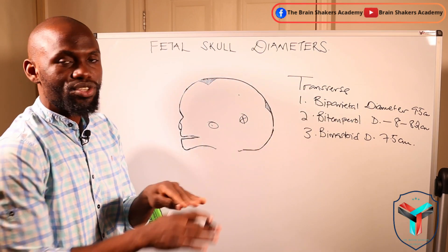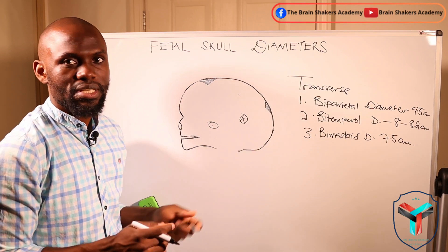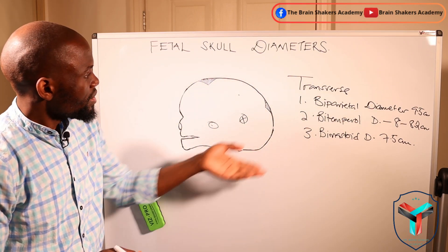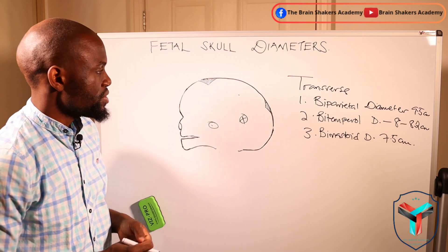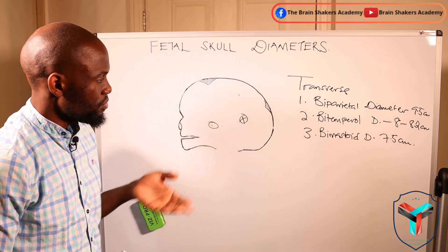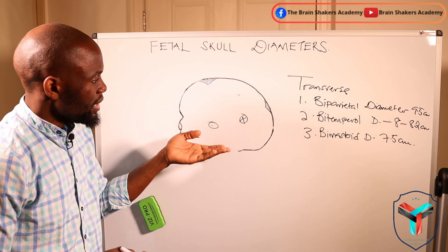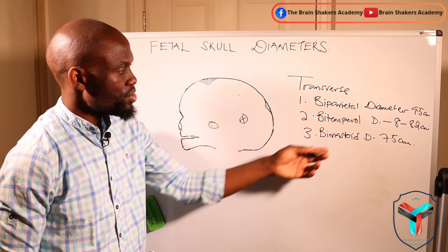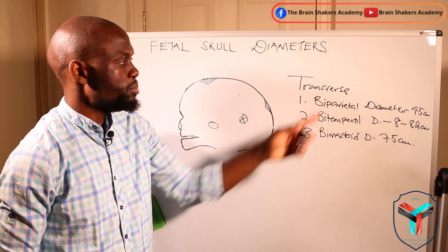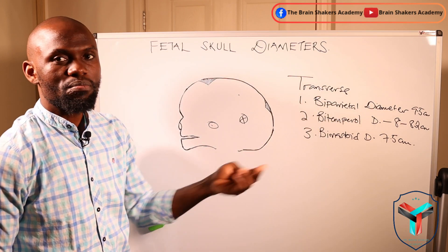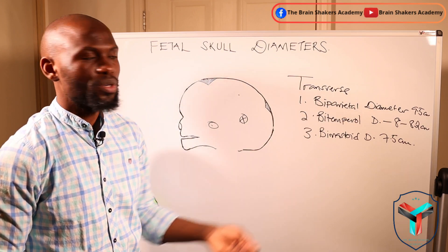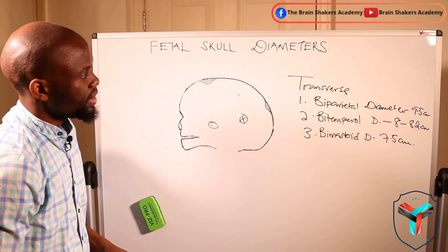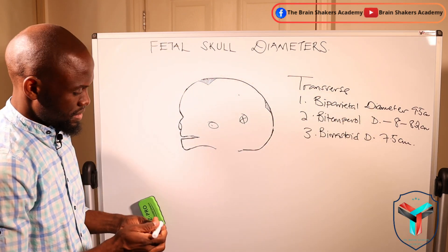So these are the three transverse diameters that you're going to find on the fetal skull and that will be of importance for you as you look at fetal skull diameters. You can remember these as MTP — mastoid, temporal, and parietal. Those three will give us the transverse diameters.